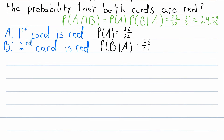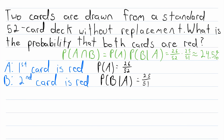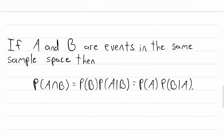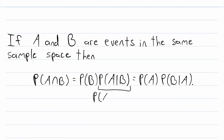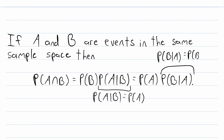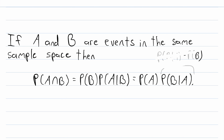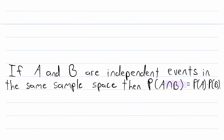For example, in our previous problem it makes a lot more sense to assume that A has already occurred, since A happens before B. It's also important to note that this formula works just fine when the two events are independent as well. If A and B are independent events, then the probability of A given B is just the probability of A. Similarly, the probability of B given A would just be the probability of B. So if A and B were independent events, this formula would just reduce to the formula we talked about above.